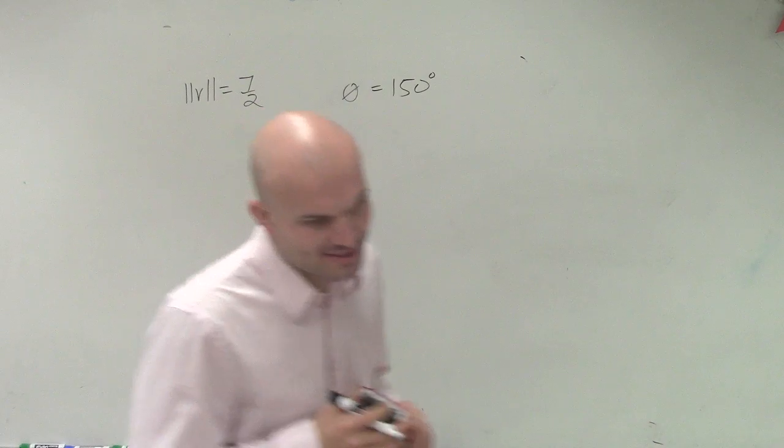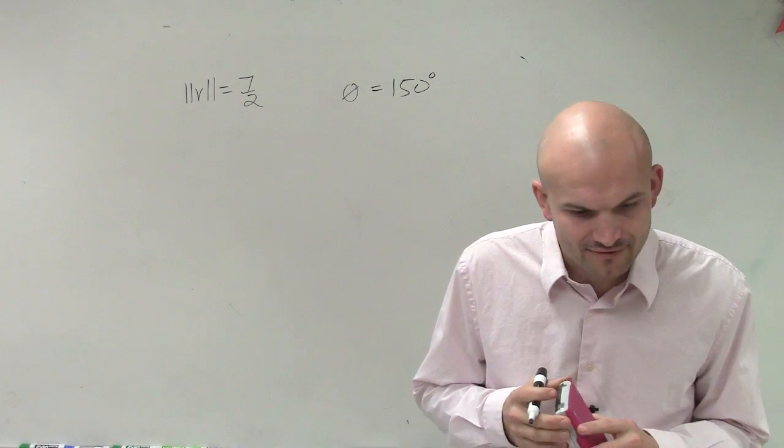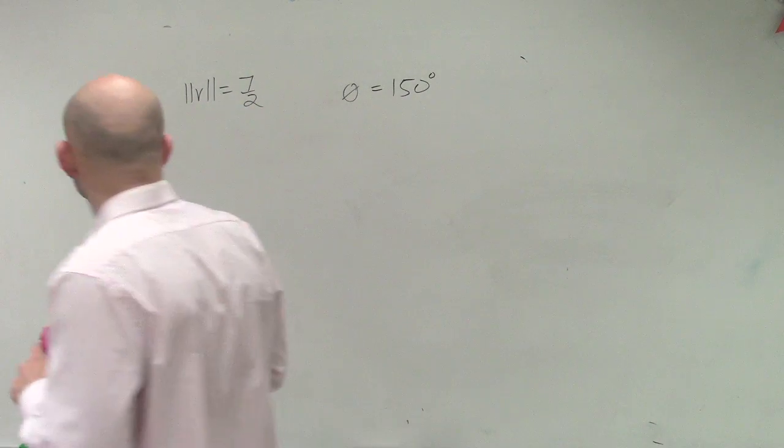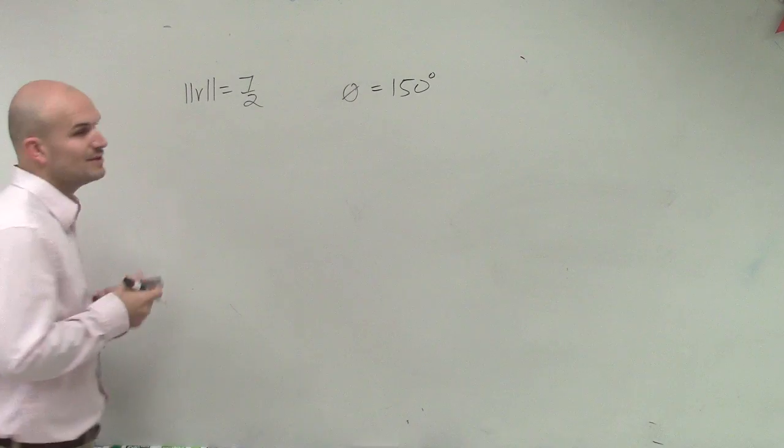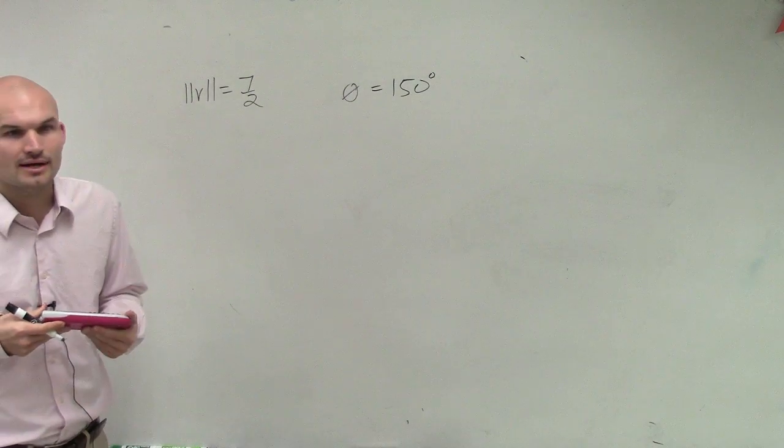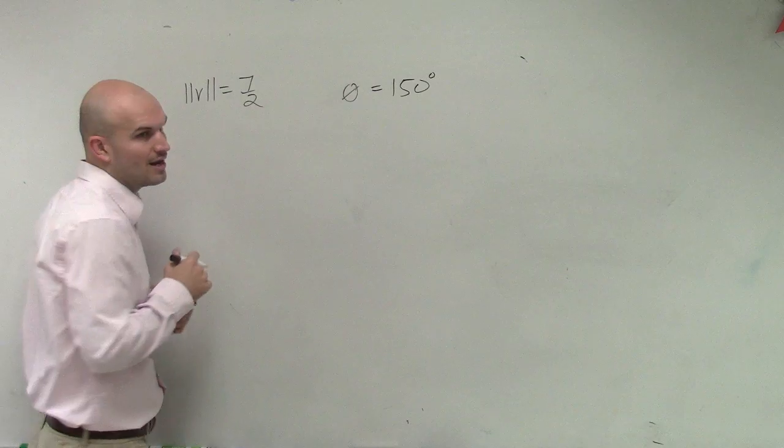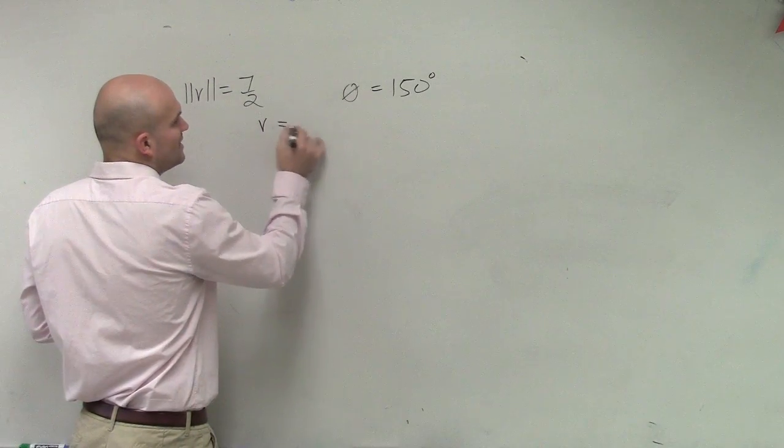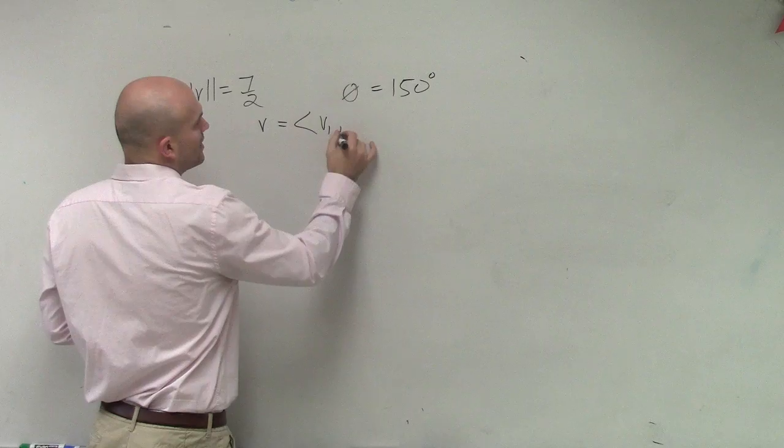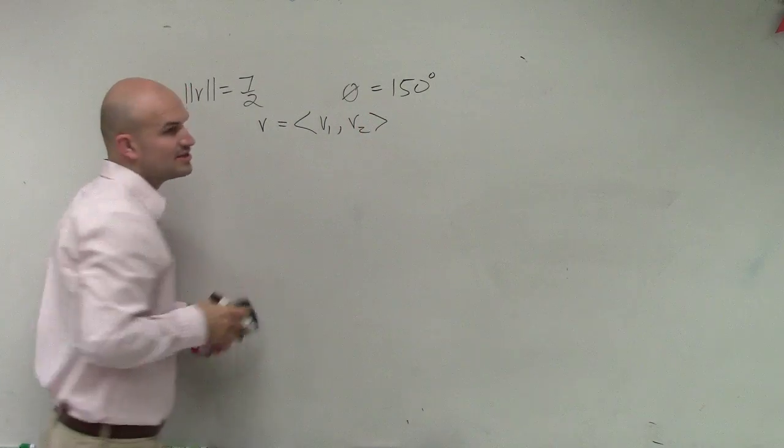So when looking at this, what we're going to have is we're given a magnitude and a theta. And remember, we've talked about how we can write out v. We said v in component form can be written as v1 comma v2.